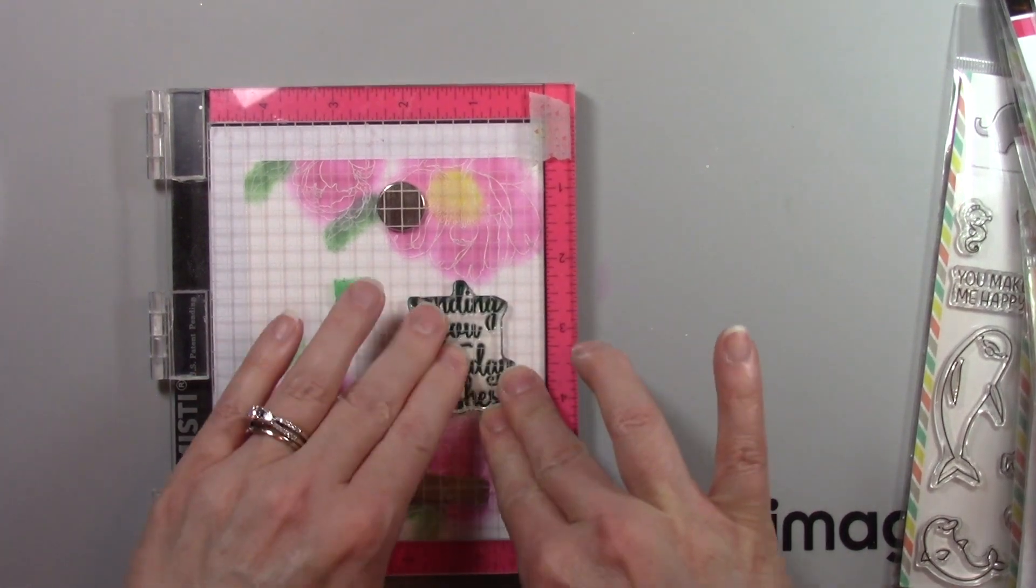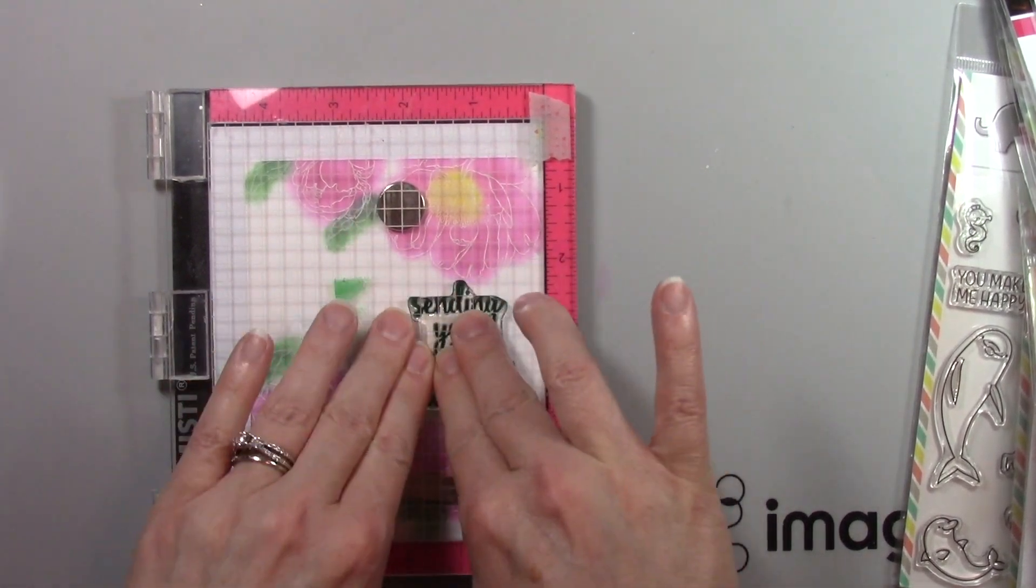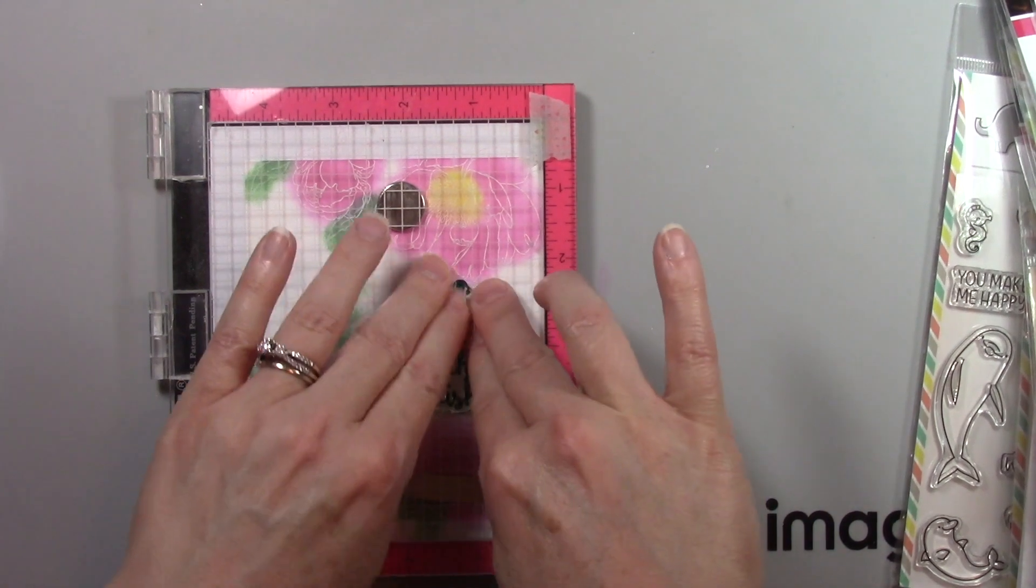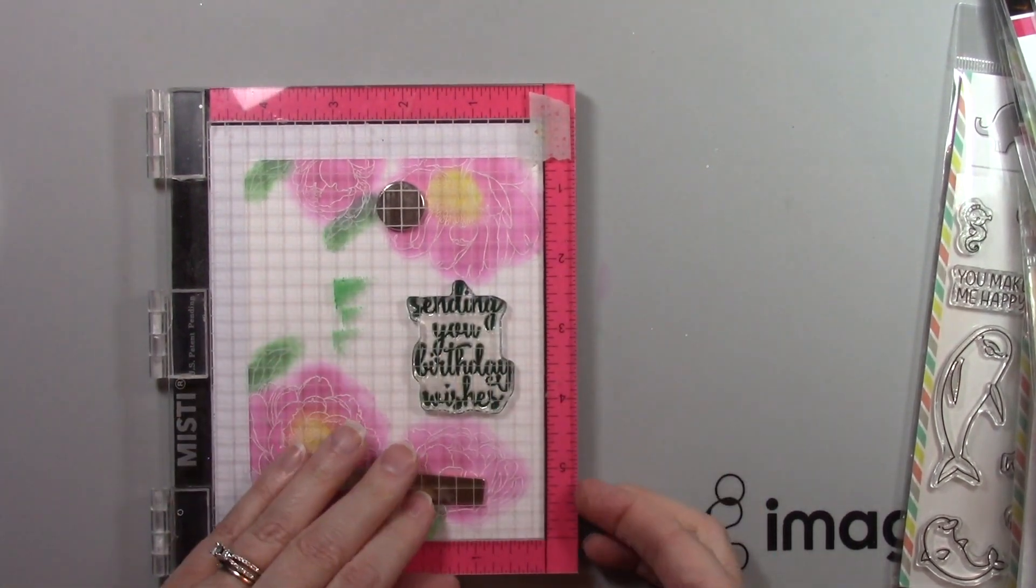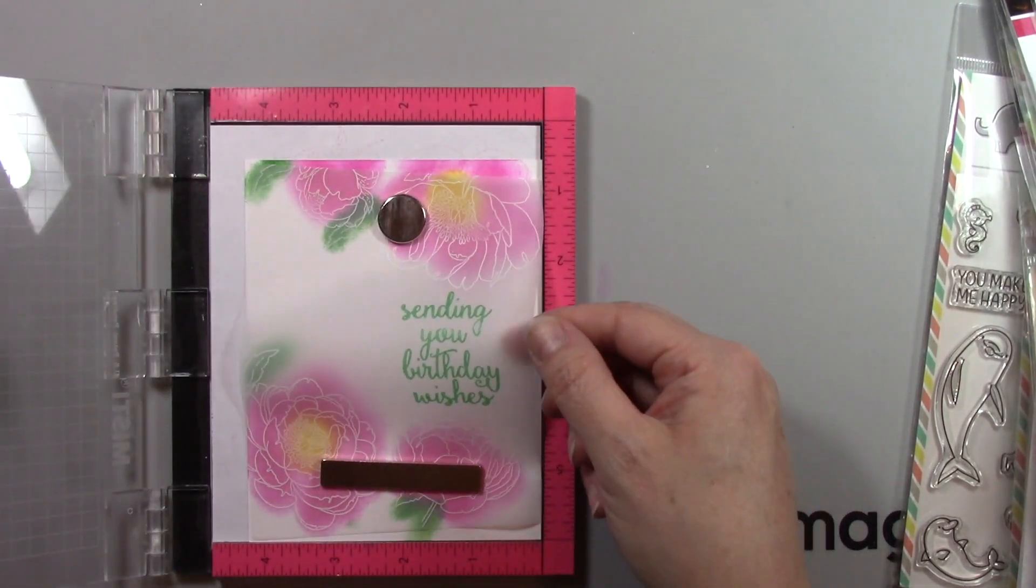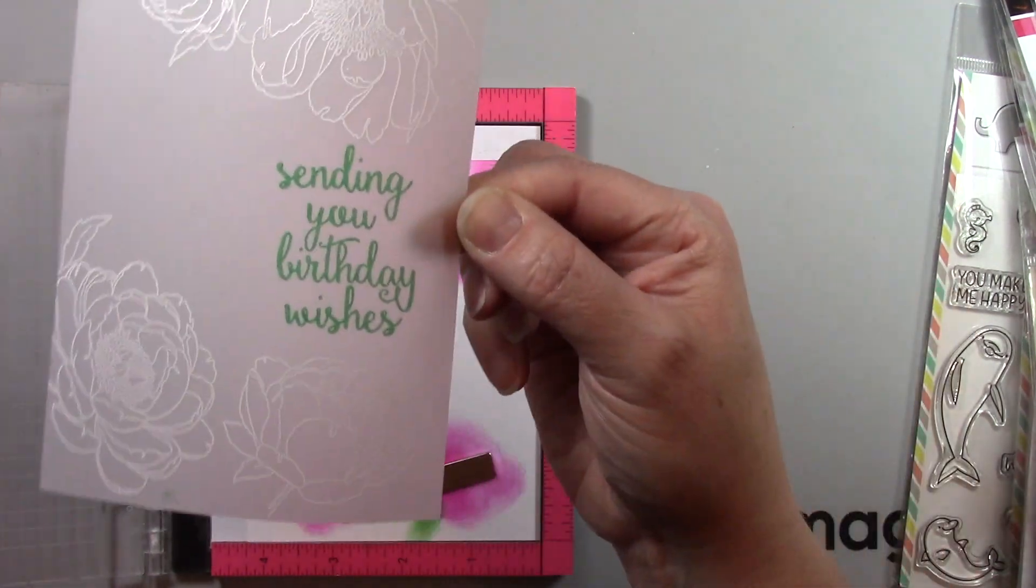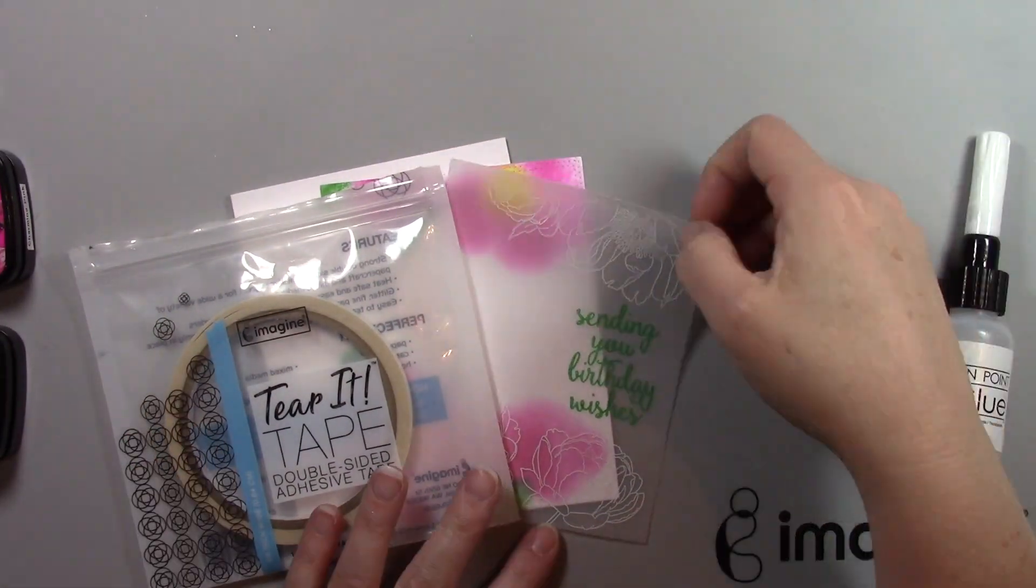And I'm simply going to push down on my MISTI again to get a nice impression where all of that green ink comes out beautifully on the vellum. I just can't get over how beautiful it stamps on vellum and here you can see that nice crisp stamping.